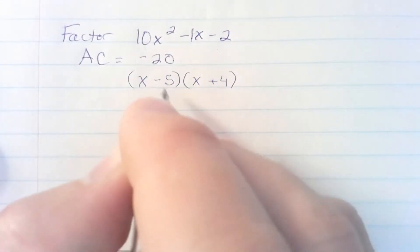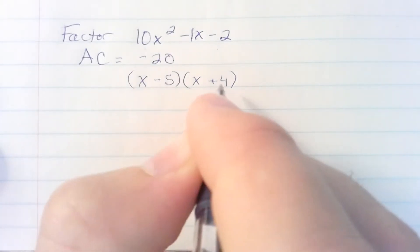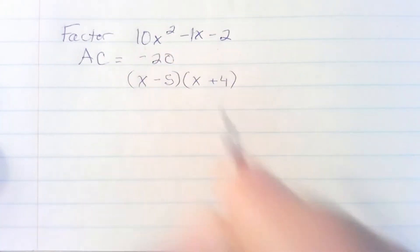I choose those because negative 5 times 4 is negative 20. Negative 5 plus 4 is negative 1. Now I'm ready for my next step.